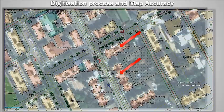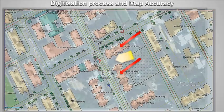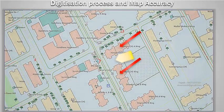These two buildings are clearly digitized in the form of polygons. This digitized information represents the open space in between the two buildings.